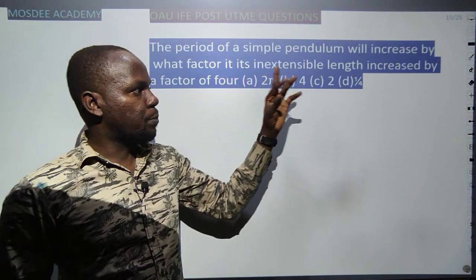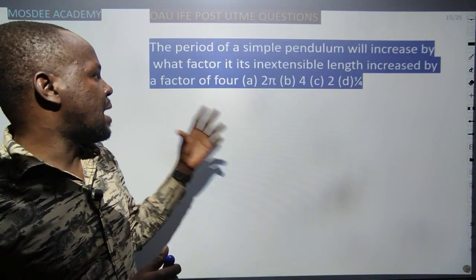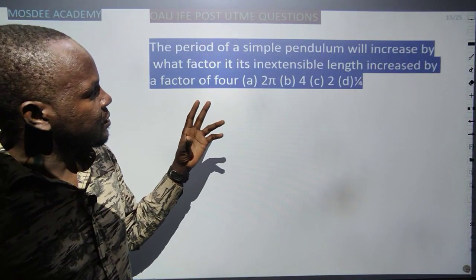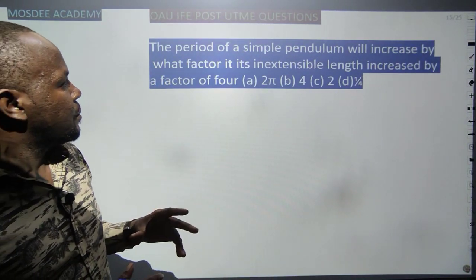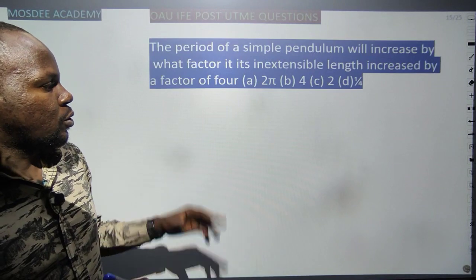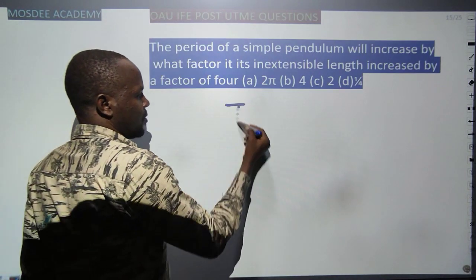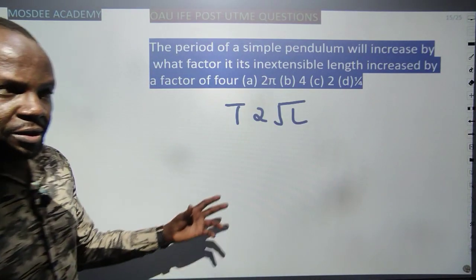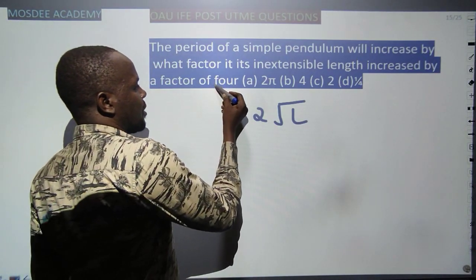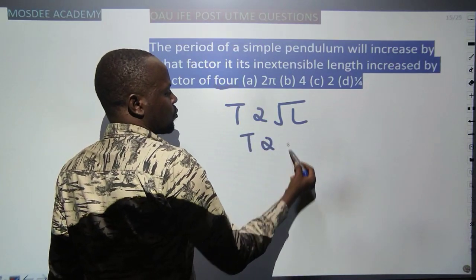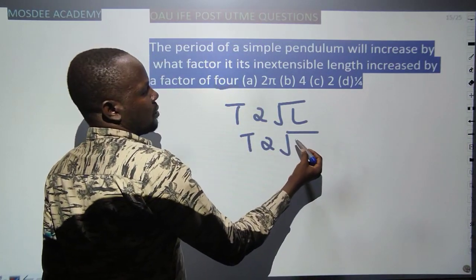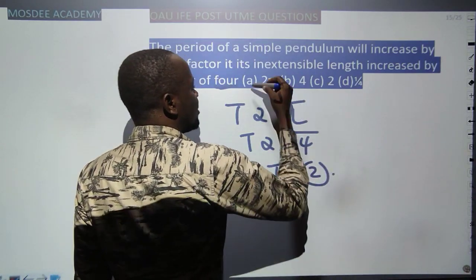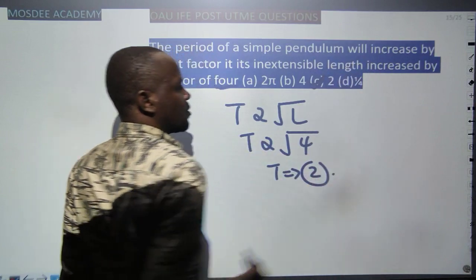The period of a simple pendulum will increase by what factor if its inextensible length increases by a factor of 4? Since period T is proportional to √L, if length increases by factor 4, the period increases by √4 = 2. So the period increases by a factor of 2.